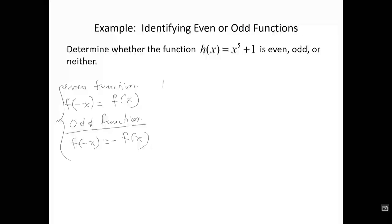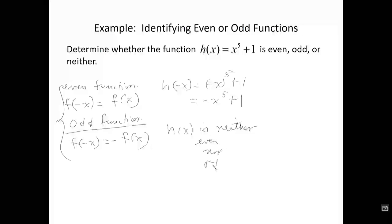We need to find h(-x). So h(-x) = (-x)⁵ + 1 = -x⁵ + 1. Comparing with the definitions: h(-x) is not equal to h(x), and h(-x) is not equal to -h(x). So we conclude that h(x) is neither even nor odd.